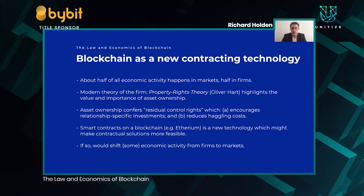These next slides are based on a paper that Anup and I wrote a few years ago about blockchain and the holdup problem. It starts with the observation that roughly speaking, half of all economic activity happens in markets and half takes place in firms. The modern theory of the firm — known as property rights theory, for which Oliver Hart won the Nobel Prize a couple of years ago — highlights the value and importance of asset ownership.